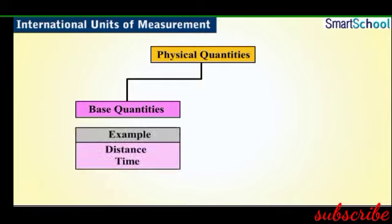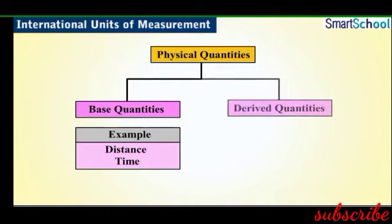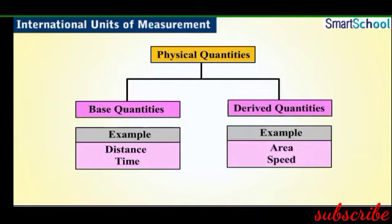For example, distance, which is a measure of length, is a fundamental quantity. It's the same with time. The other quantities, which are expressed in terms of fundamental quantities, are called derived quantities. For example, area or volume, which is expressed in terms of multiples of length, is a derived quantity.